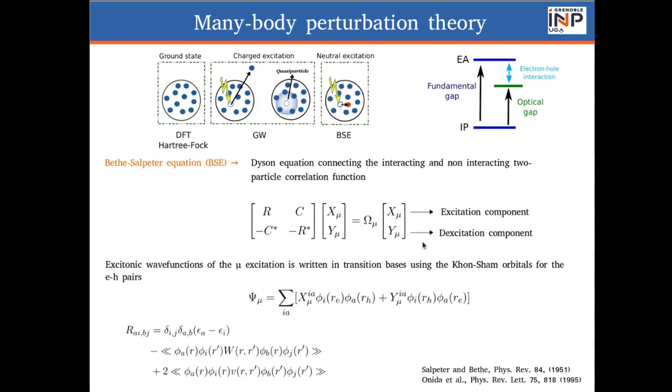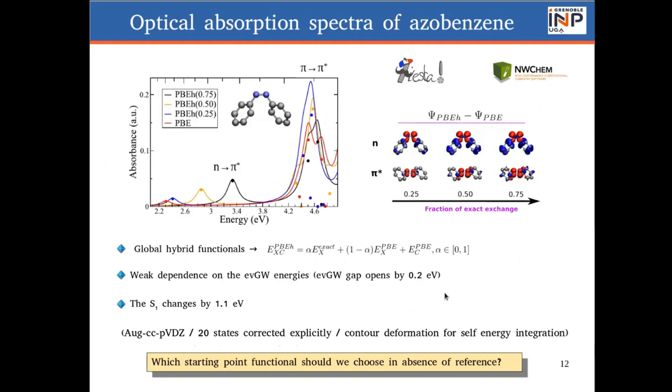Which is written in terms of electron-hole pairs using, again, the Kohn-Sham orbitals.